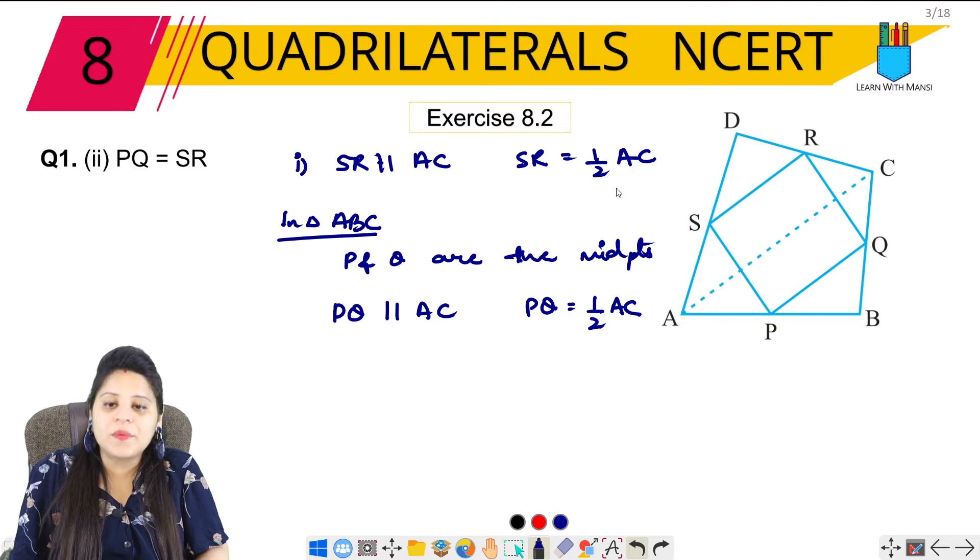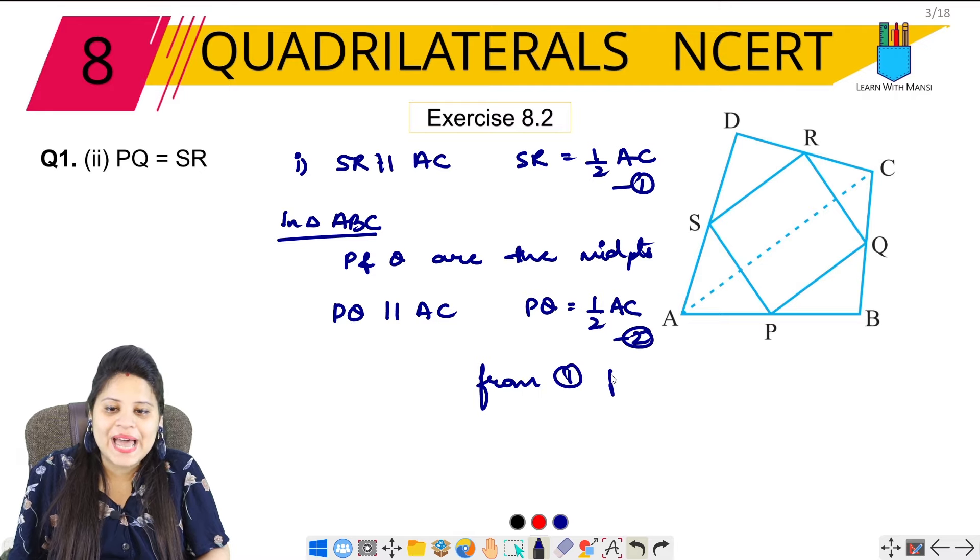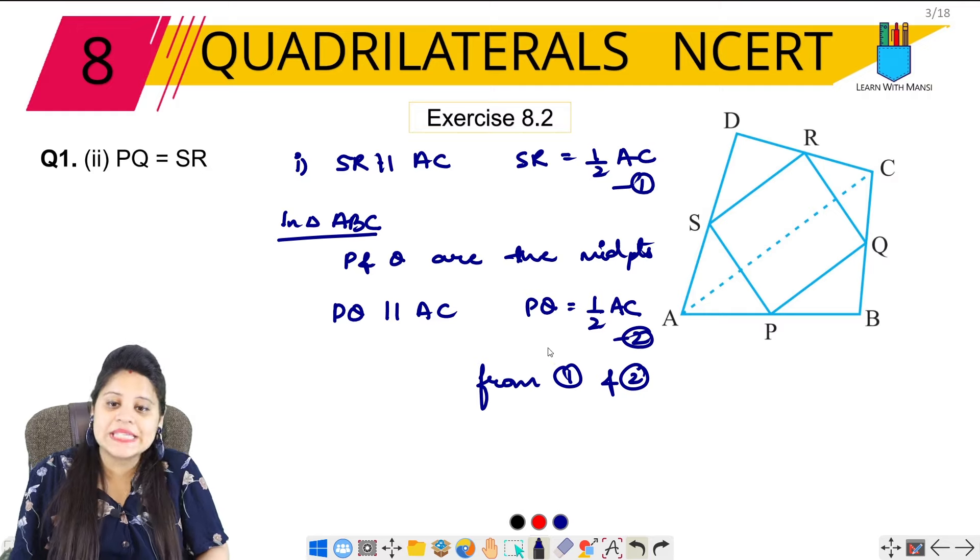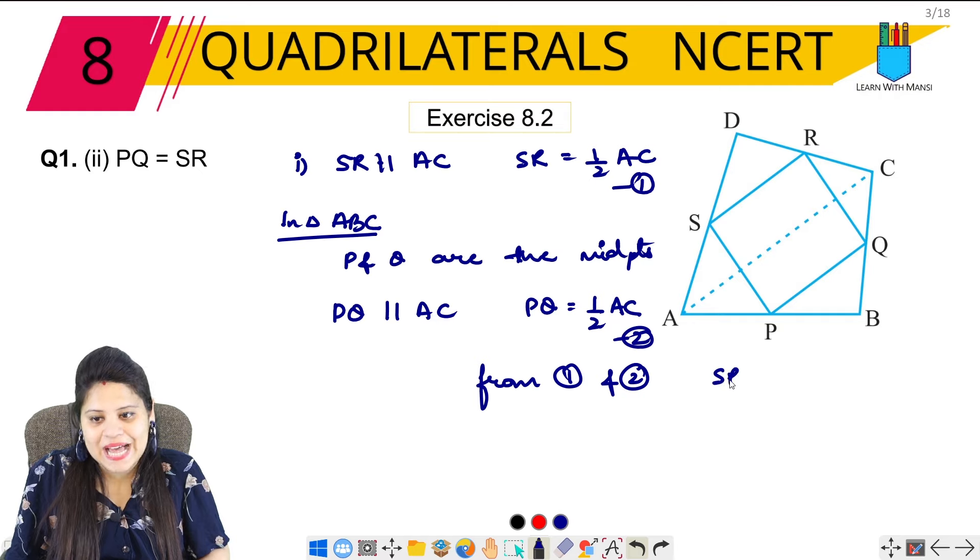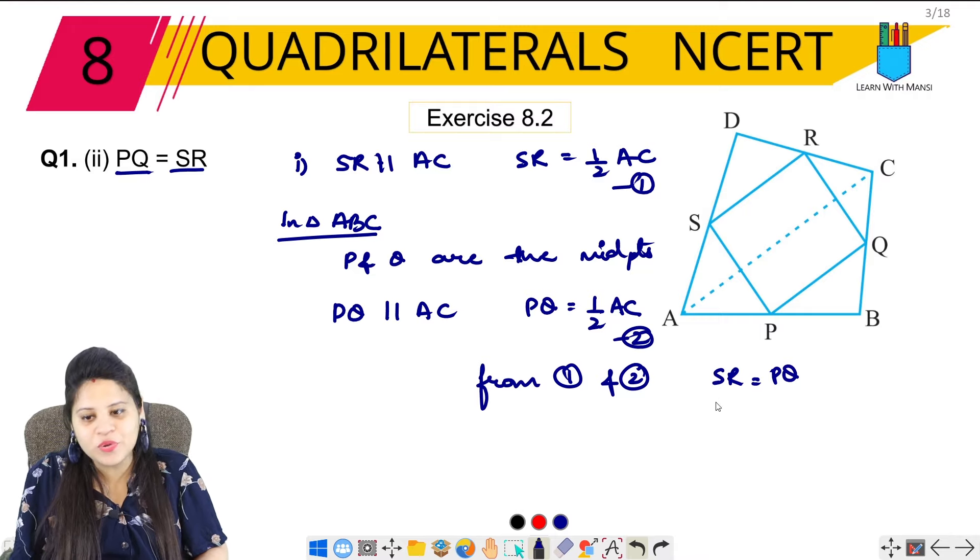From equations one and two: SR equals half of AC, and PQ equals half of AC. Therefore, SR equals PQ. We have proved that PQ and SR are equal.